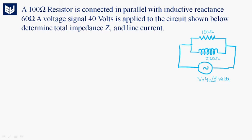Hi guys, today our question is: a 100 ohm resistor is connected in parallel with an inductive reactance XL. The inductive reactance is 60 ohms and a voltage signal of 40 volts is applied to the circuit shown below. We need to determine the impedance Z and the line current.